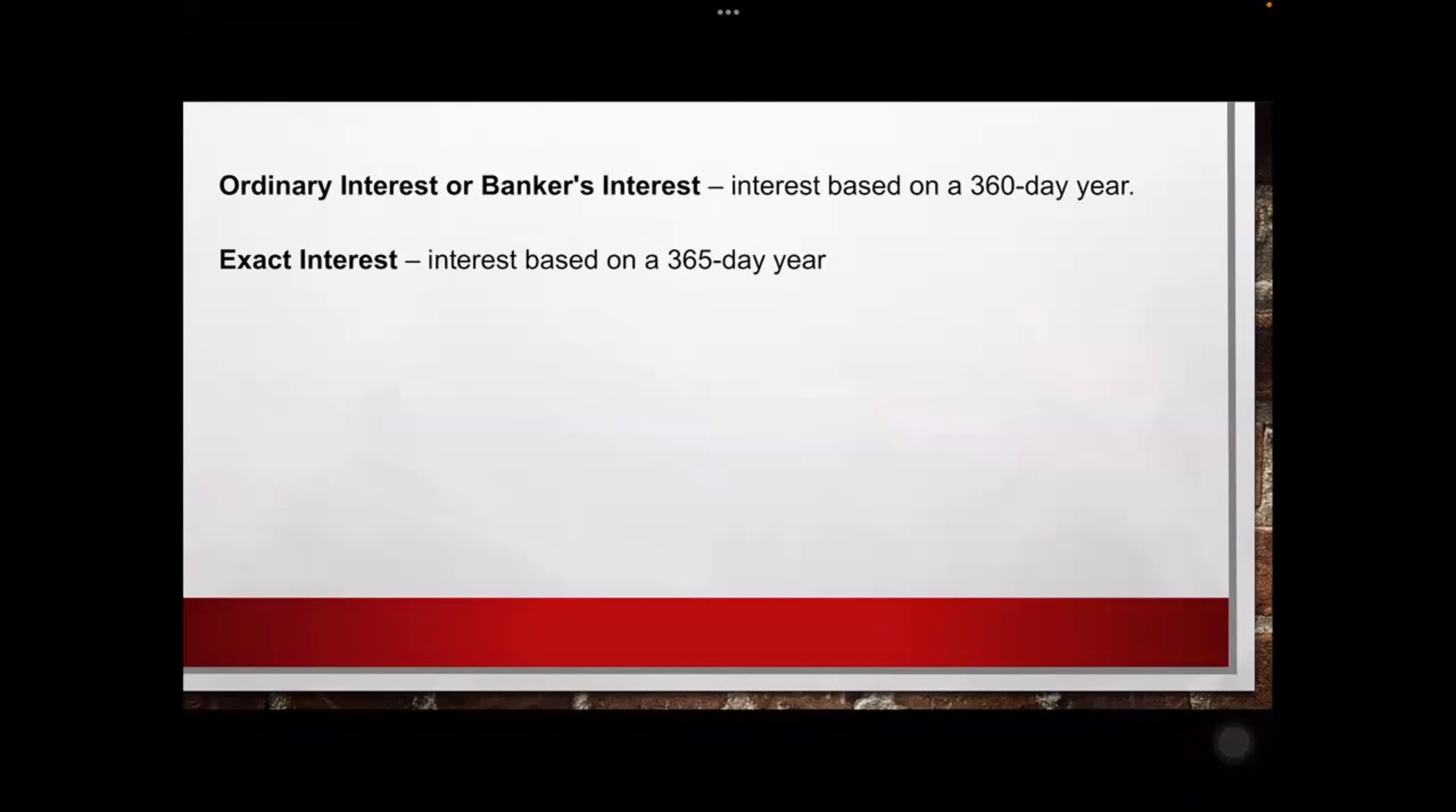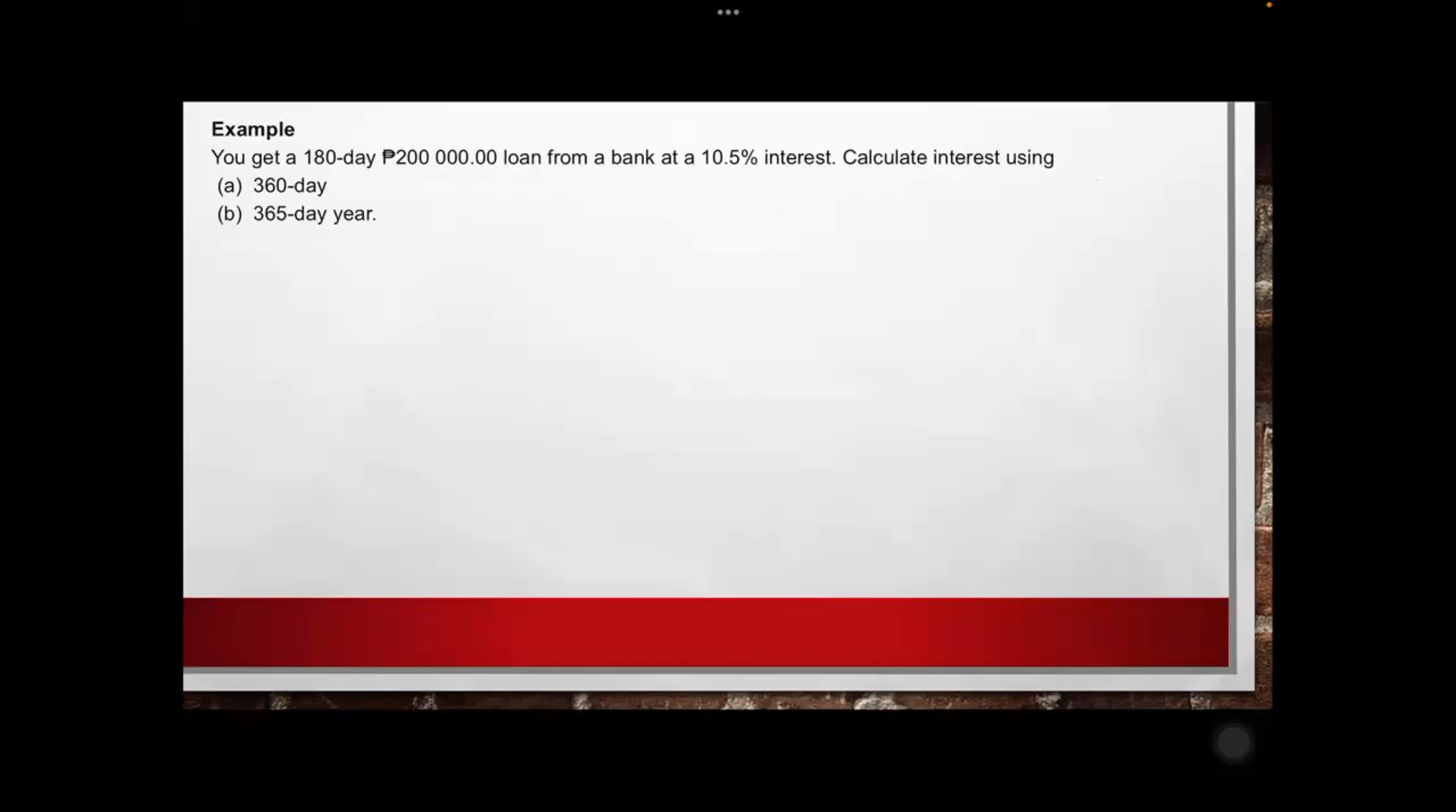Next, we have the ordinary interest or the bankers interest. This is the interest based on 360 days per year. Then the exact interest is the interest based on 365 per year. Now, we have what's called a leap year. Therefore, we have 365 and one-fourth days. So February 28th has an additional day, which is 29, every 4 years. So we'll apply that later. Again, bankers interest is 360, while the exact interest is 365.